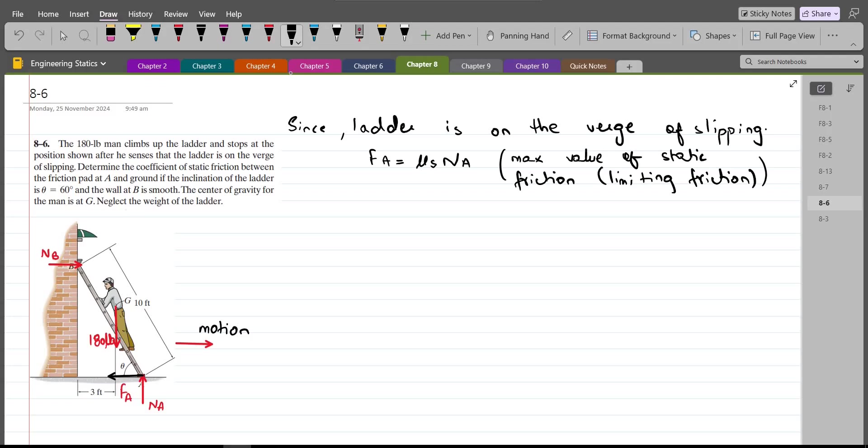So now we can apply our equations of equilibrium. So our first equation would be summation of forces in y direction equals to 0. I am considering up direction as positive. So we have NA minus 180 lb equals to 0. So from here NA comes out to be 180 lb.